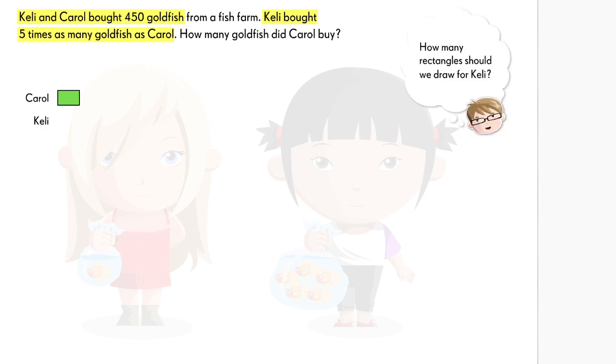How many rectangles should we draw for Kelly? Kelly bought five times as many goldfish as Carol. Therefore, we draw five rectangles.